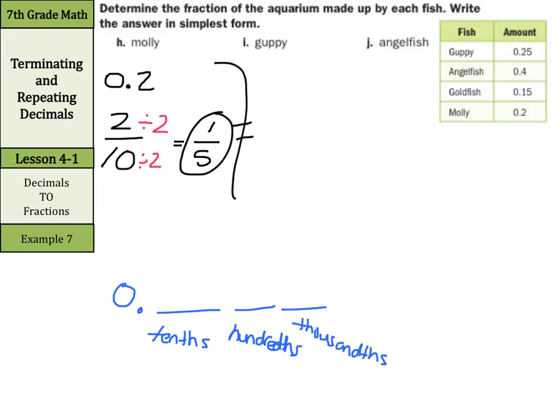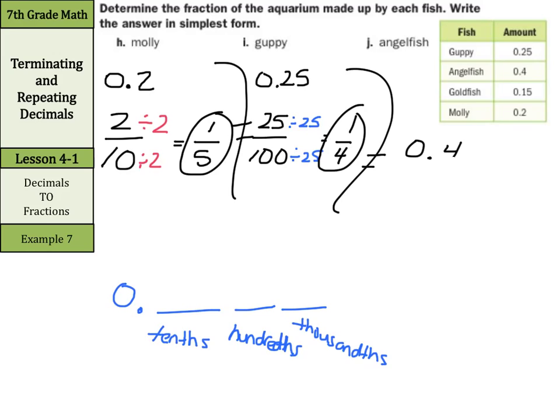What about our guppies? Our guppies here, 0.25. That 25 is twenty-five hundredths, so we have twenty-five over one hundred, and you can actually divide top and bottom here by twenty-five to get your result of one-fourth. And then we have our angelfish. 0.4. Once again, that four is in the tenth spot, so I can rewrite this as four over ten. I can divide by two on top and bottom in order to get this into simplest form, and simplest form here is two-fifths.